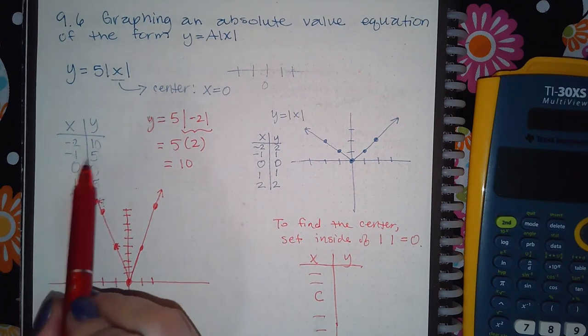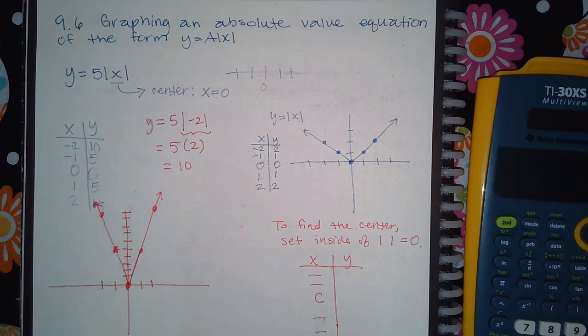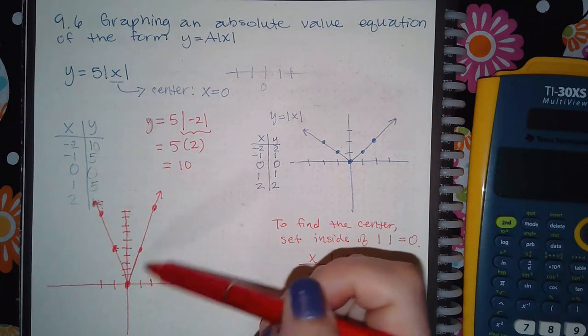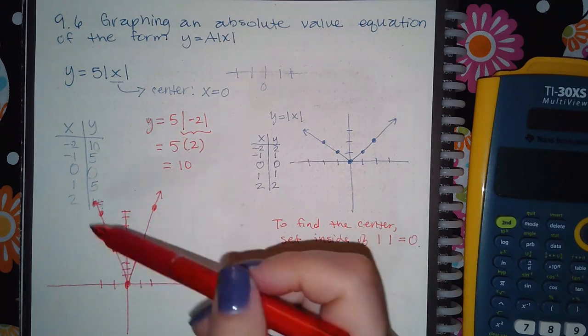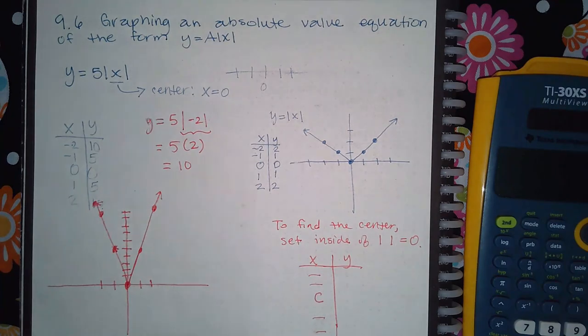Because if I happen to make a mistake on one of these, what will happen is my graph will be wrong, and I wouldn't know it was wrong until it's too late, and the computer told me it was wrong, and then I got credit taken away. So it's good to have two. So when you do try to draw the rays, if the rays don't go through both of those points on the right and both of the points on the left, then you know something's wrong, and you can go fix it before you hit the submit button.